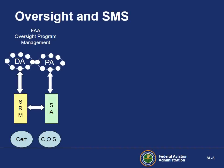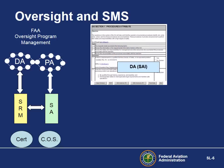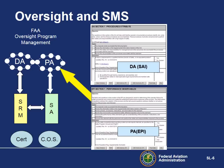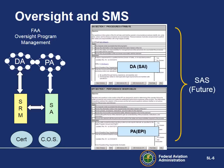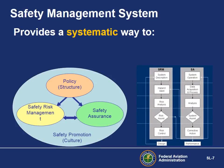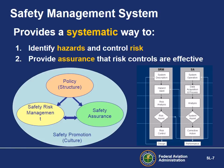To complete the oversight picture, the design assessment is performed using the ATOS Safety Attribute Inspection Tool, and the performance assessment is performed using the ATOS Element Performance Inspection Tool. In the future, the Safety Assurance System, SAS, will meld System Safety, ATOS, and SMS. SMS provides a systematic method to identify hazards and control associated risk, and provide assurance that risk controls remain effective.